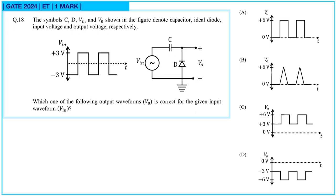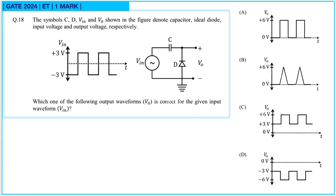The arrangement has a capacitor and diode. This is a clamper circuit, so the output waveform will be shifted.